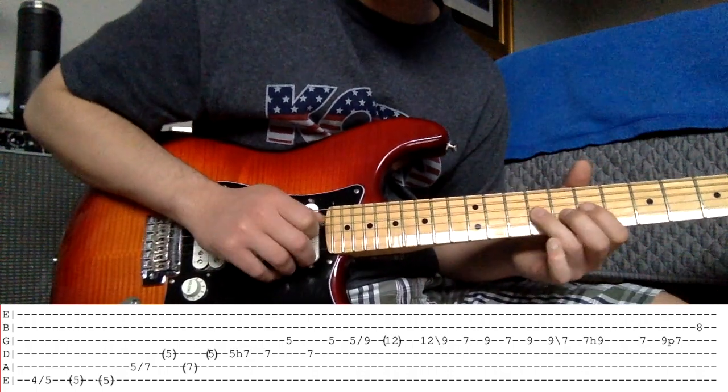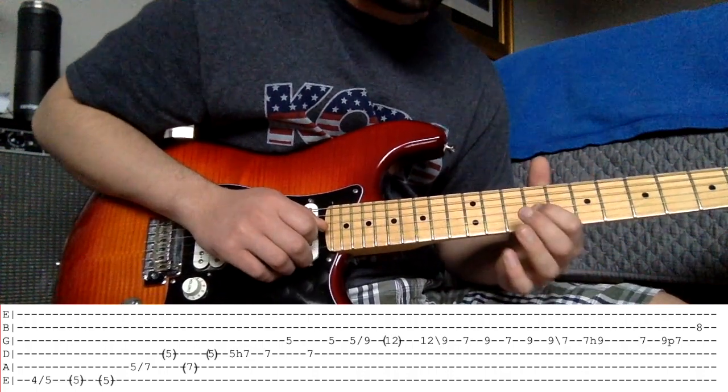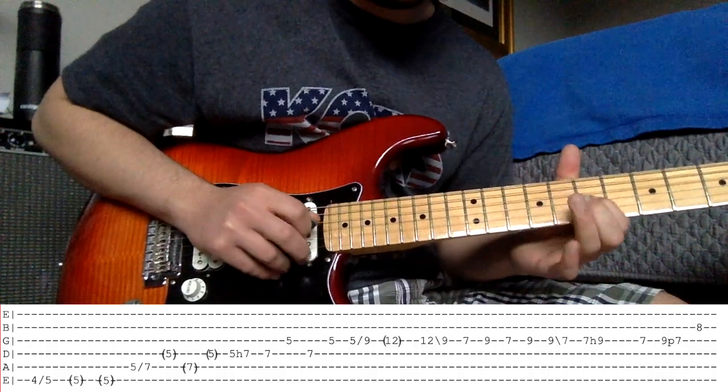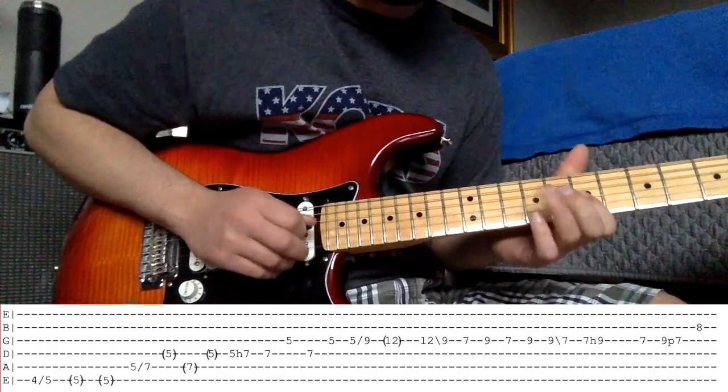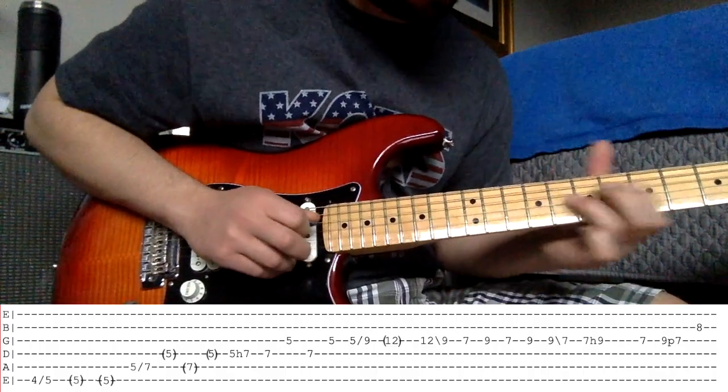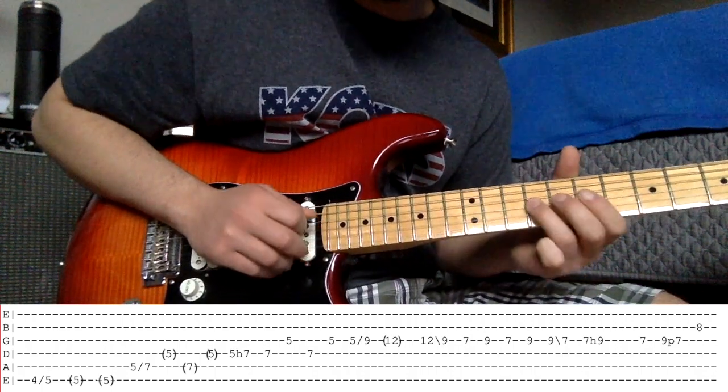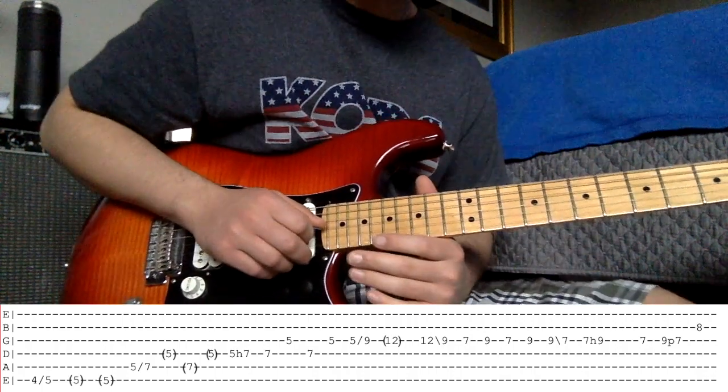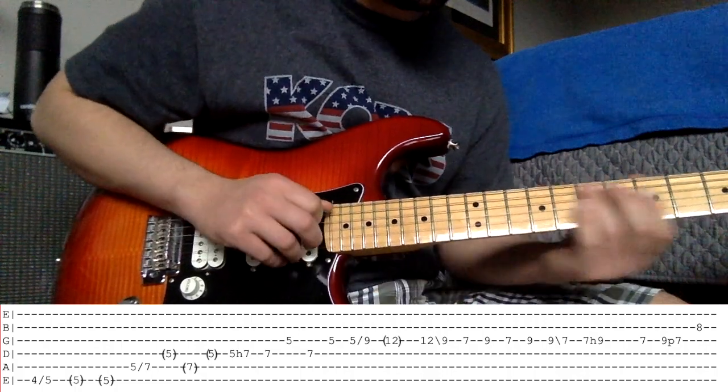Then he goes 7, 9, 7, 9 on the G. And he slides 9 to 7. And then hammers on 7 to 9. All on the G. Cool. So, do that part one more time.